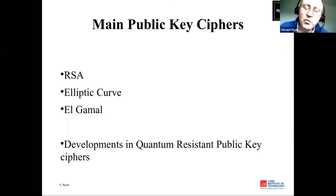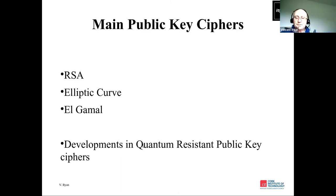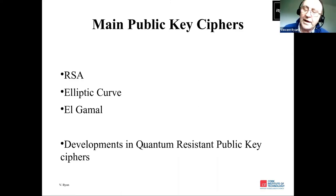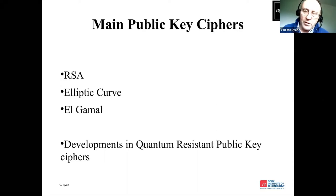When quantum computers become readily available, we will have a cipher that everyone can use. The National Institute for Standards and Technology is running that competition right now, at phase three, having brought it down to four main ciphers for general encryption.